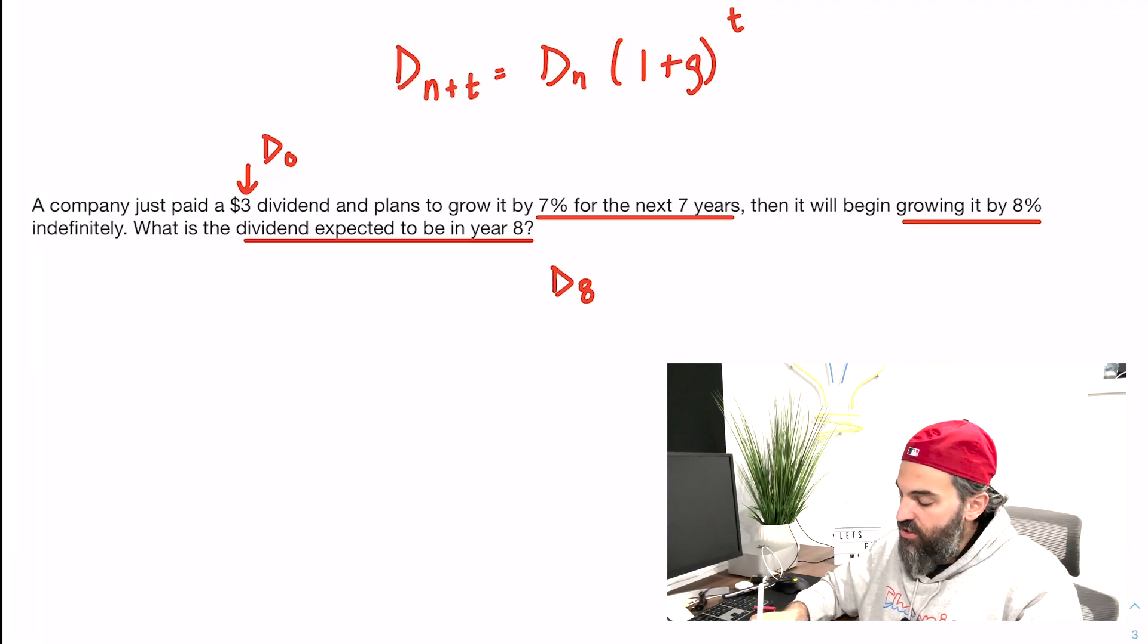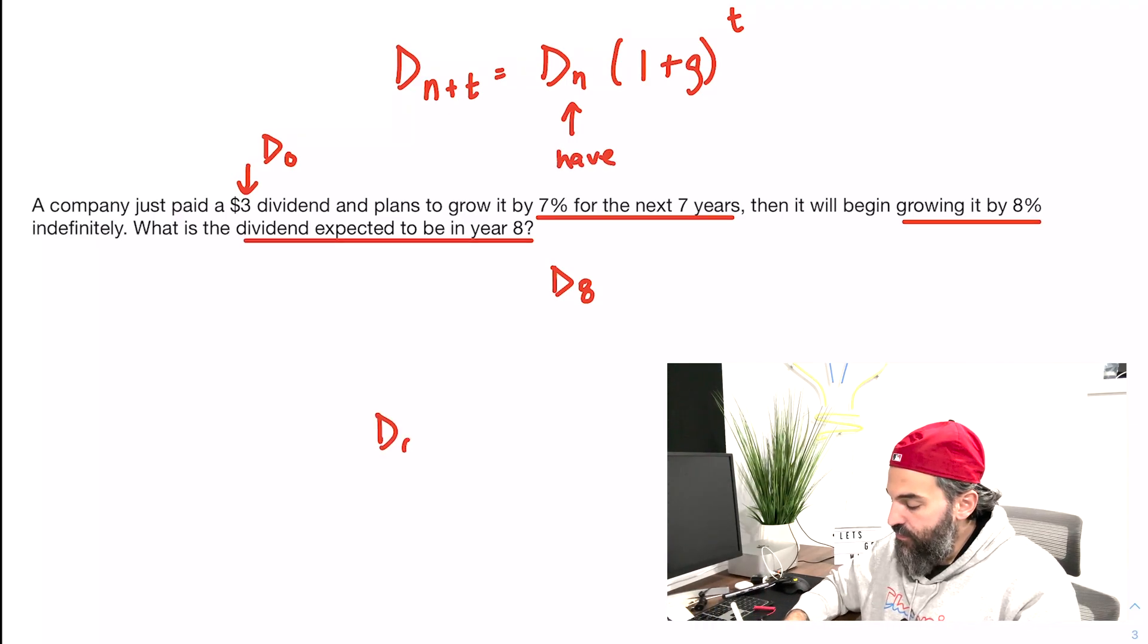So whenever this happens, you want to start with the dividend you have. So in this formula here, this is what you have. So I have D0, and if I multiply it by 1 plus g to the 7, because it's going to grow by 7 times, that'll give me D7.